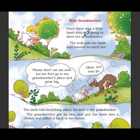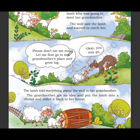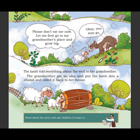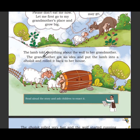Wise Grandmother — once there was a little lamb who was going to meet her grandmother. The wolf saw the lamb and wanted to catch her. As you can see, there is a lamb who wants to go to her grandmother's home. The lamb said: please don't eat me now, let me first go to my grandmother's place and grow big. The wolf replied: OK, you may go.